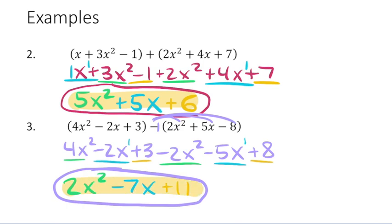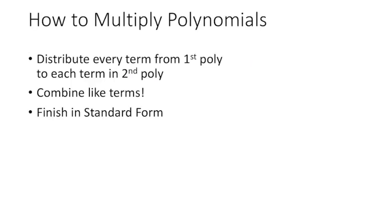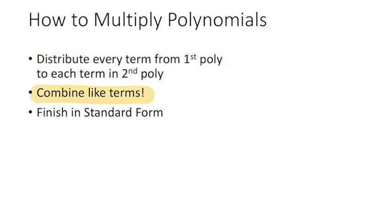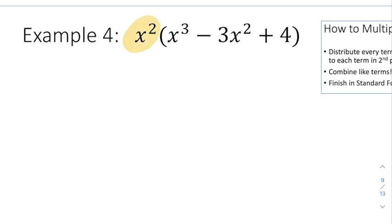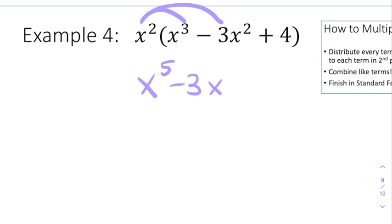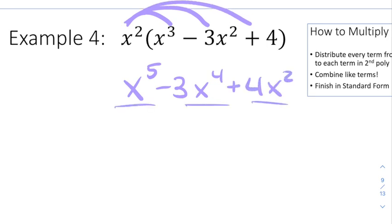Those two problems give us a good idea of how to add and subtract polynomials. Our last operation is multiplying polynomials — I like to think of these as double distributing. We distribute every term from the first polynomial to every term in the second, then combine like terms. This is easy when the first polynomial is a monomial, because it's really just the distributive property. x squared times x to the third is x to the fifth, x squared times negative 3x squared is negative 3x to the fourth, and x squared times 4 is 4x squared. There are no like terms to combine, so the problem is done.